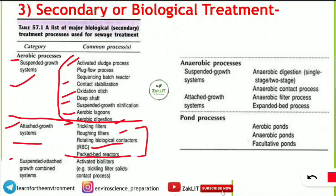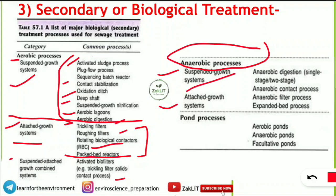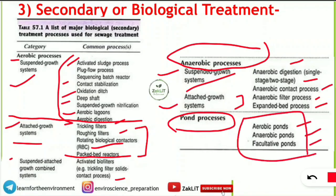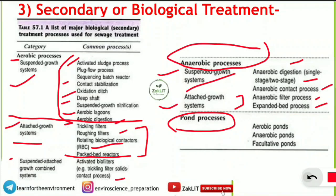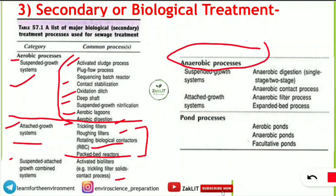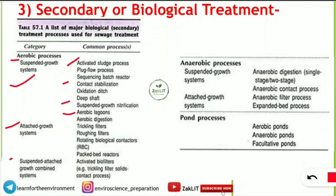The combined suspended-attached growth system includes activated bio filters and the trickling filter solids contact process. For the anaerobic process, where oxygen is not required, there are two categories: suspended growth system and attached growth system. Suspended growth includes anaerobic digestion (single or two stage) and anaerobic contact process. Attached growth includes anaerobic filter process and expanded bed process. The pond process includes aerobic ponds, anaerobic ponds, and facultative ponds, based on the type of microorganism used.